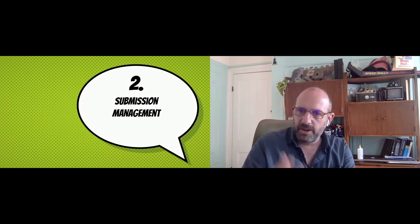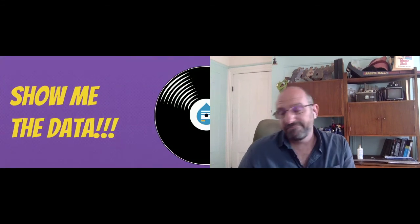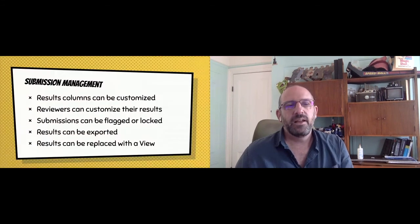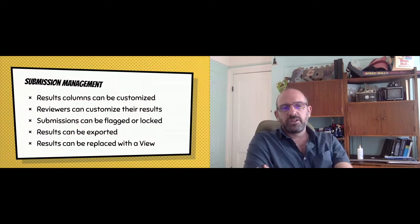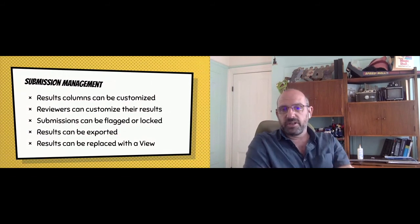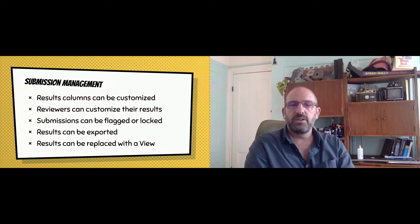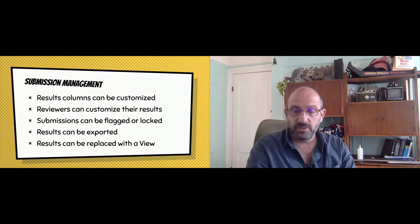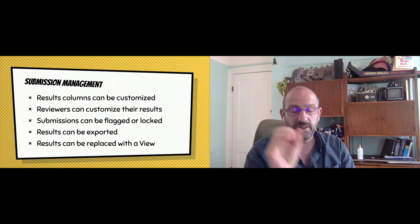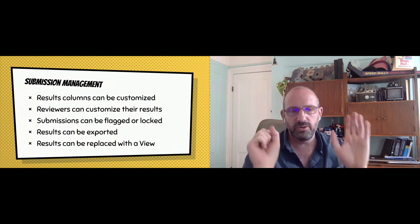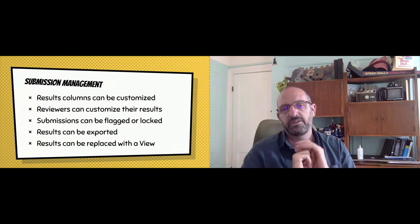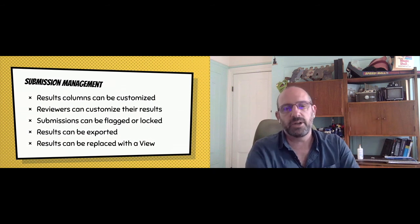We've created a form and gotten a submission — let's talk about submission management, titled 'Show Me the Data.' When you start to look at the results, the columns can be customized. Reviewers can customize their results — someone looking at it can say 'here are the columns everyone should see,' and an individual user can say 'these are the columns I want to see.'